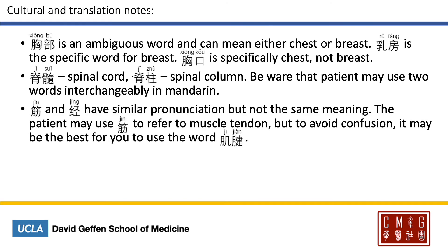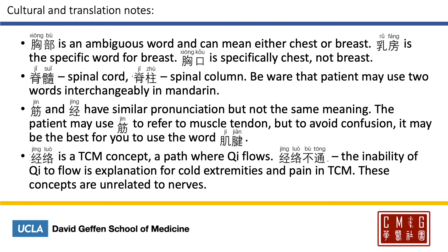There are two Chinese characters with similar pronunciations: 筋 and 经. The first character 筋 also refers to the muscle tendon — but to avoid confusion, it may be best to use the word 肌腱. For the latter character 经, 经络 is a traditional Chinese medicine concept — it's a path where the qi flows. You might hear the patient say 经络不通, or the inability of the qi to flow. It's an explanation for things like cold extremities and pain in traditional Chinese medicine. 经络 also has nothing to do with 神经, which means nerves. Although the two characters sound the same, they refer to concepts that are unrelated to each other.